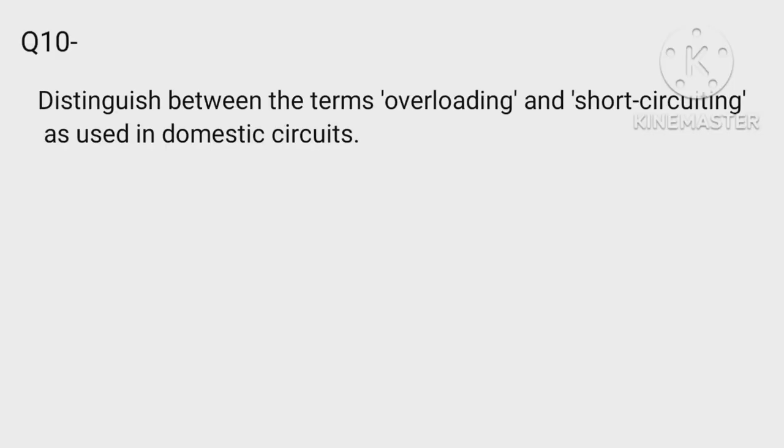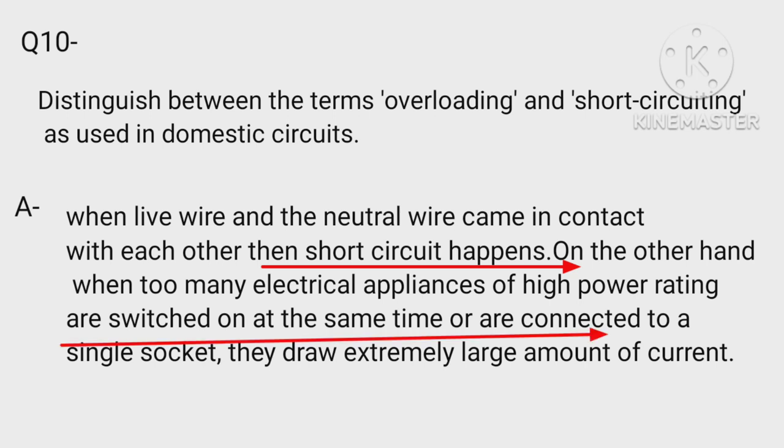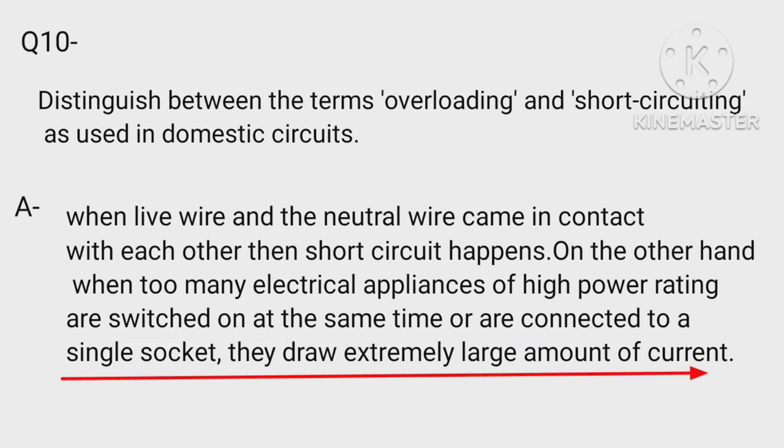Distinguish between the terms overloading and short circuiting as used in domestic circuits. When live wire and the neutral wire come in contact with each other then short circuit happens. On the other hand, when too many electrical appliances of high power rating are switched on at the same time or are connected to a single socket, they draw extremely large amount of current.